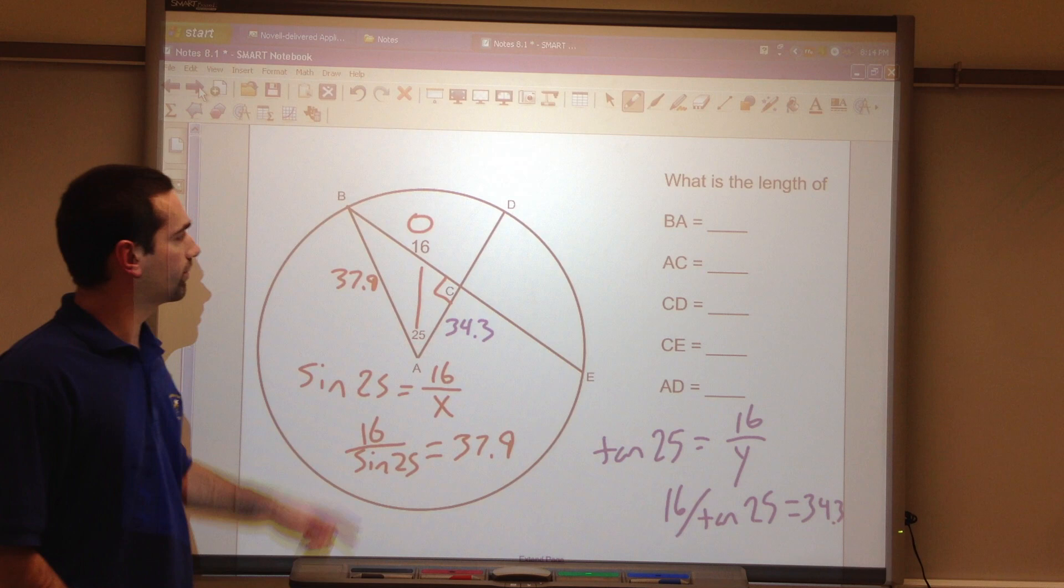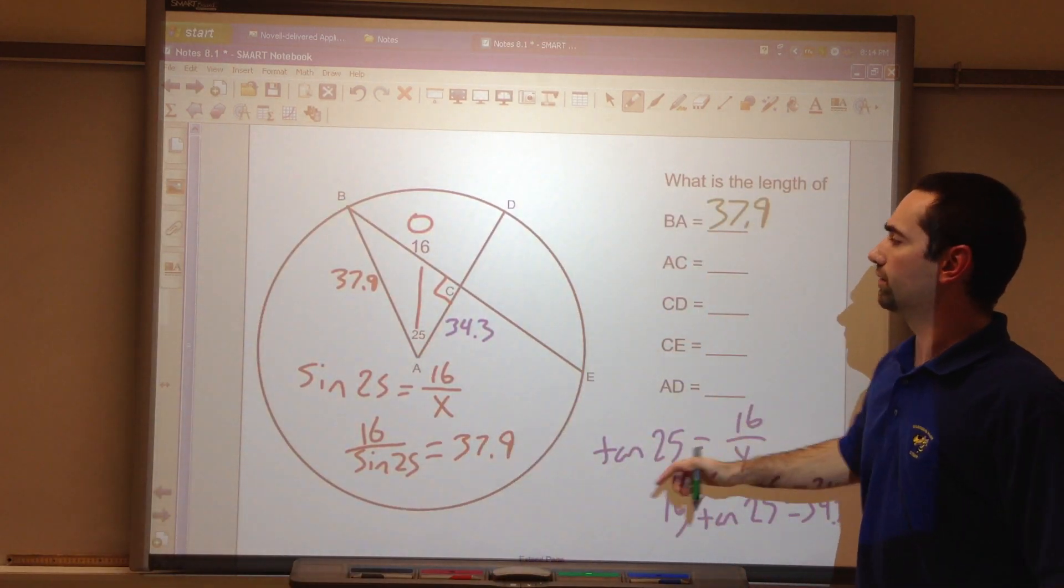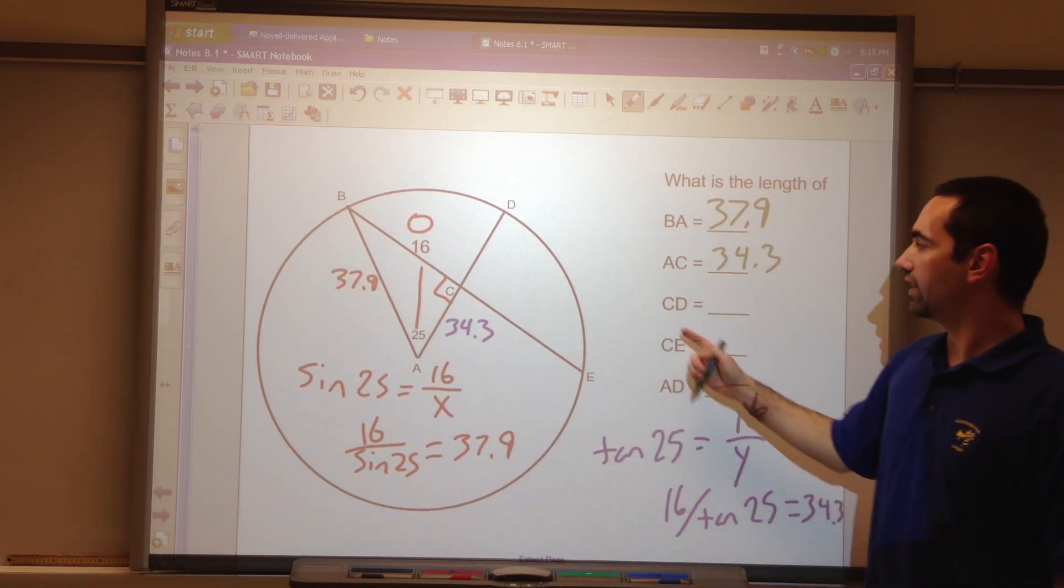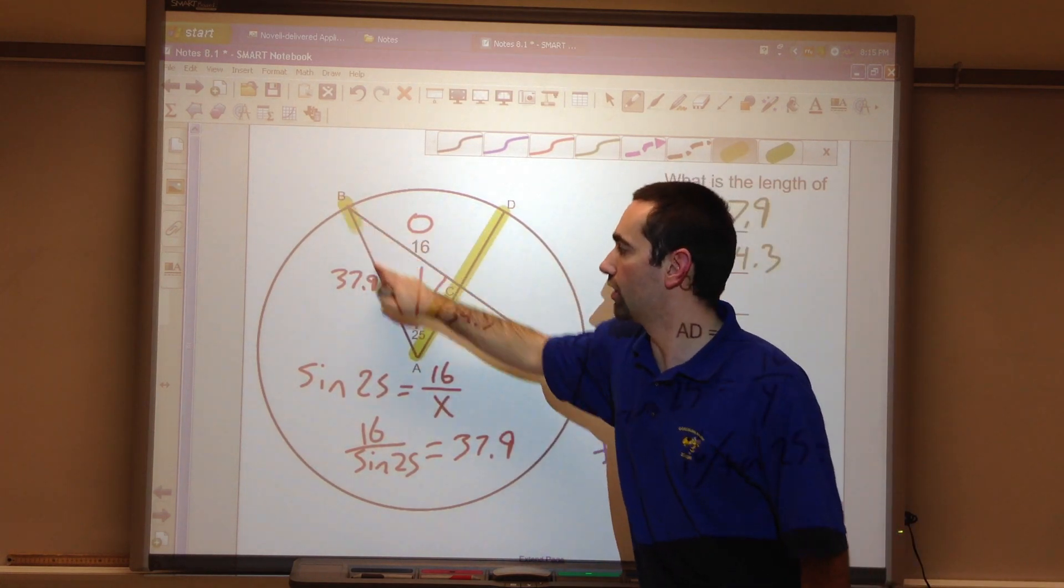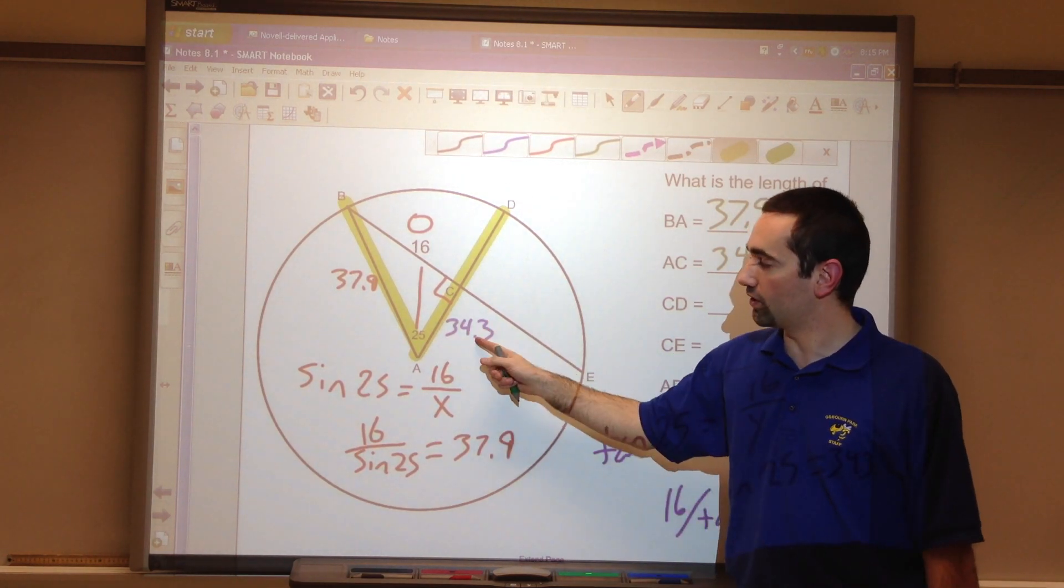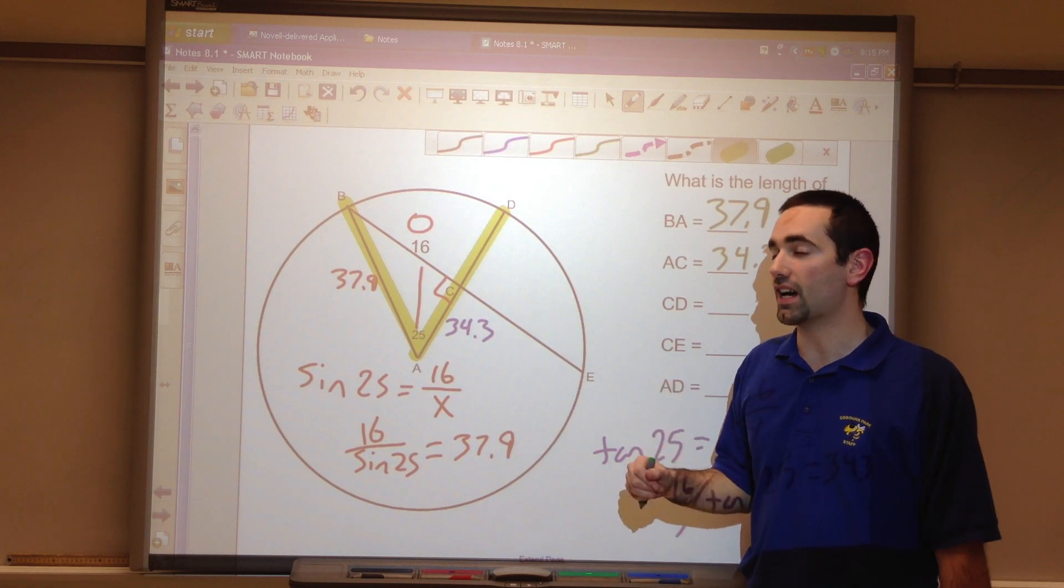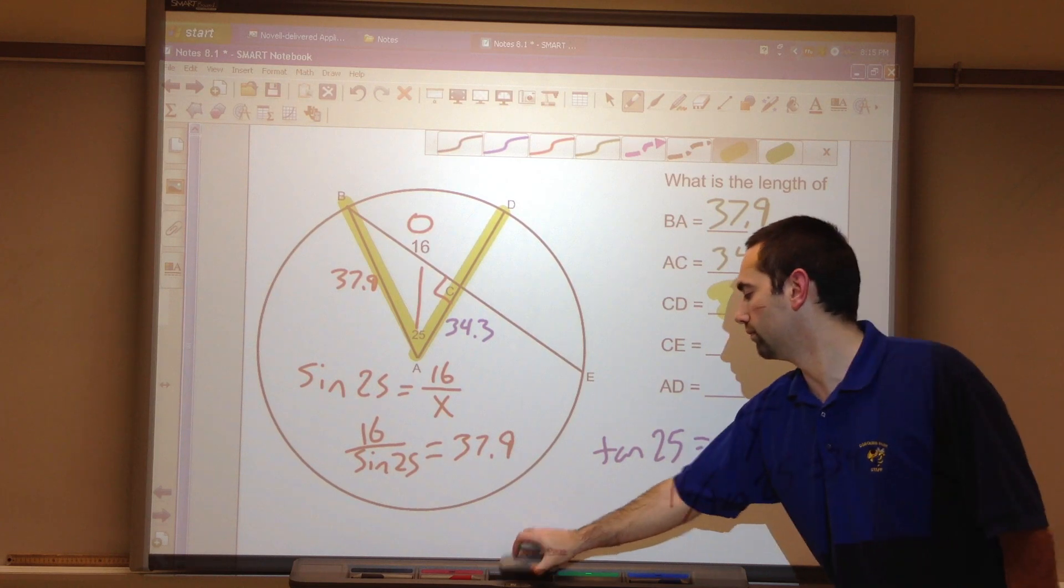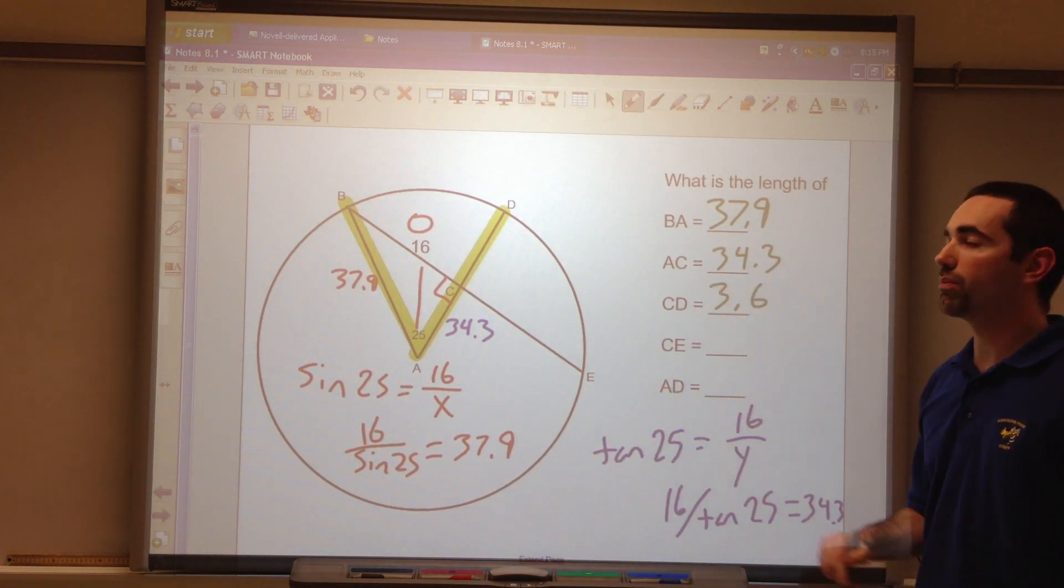So this is now 34.3. So let's fill in some information. BA, 37.9. AC, 34.3. CD. Well, this is the radius. It's congruent to that. So it's 37.9. This part of it is 34.3. I subtracted 37.9 minus 34.3. 3.6.